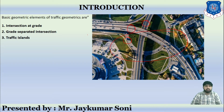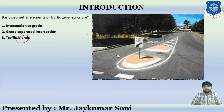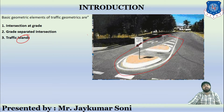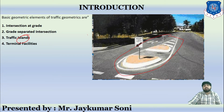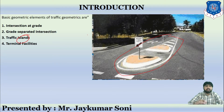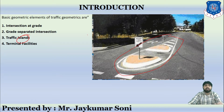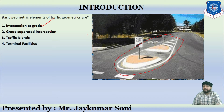Then comes traffic islands. You might have observed this kind of thing while travelling on highways or on the urban roads of Gandhinagar city — this kind of thing is provided, and it is called as a traffic island. Then comes terminal facilities, which means various kinds of facilities such as drop-off and pick-up facilities. So, the basic geometric elements of traffic geometry can be divided into four things: intersection at grade, grade-separated intersection, traffic islands, and terminal facilities.